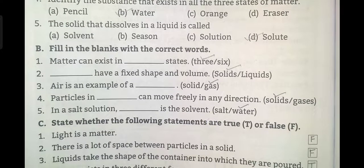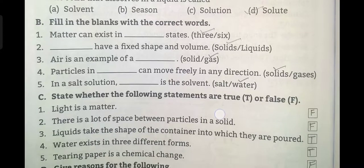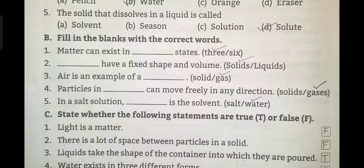Fill in the blanks. Matter can exist in three states. Dash have a fixed shape and volume. Only solids have the fixed shape and volume. Air is an example of a gas. Particles in dash can move freely in any direction. The answer is gases. In a salt solution, dash is the solvent. Water is the solvent.